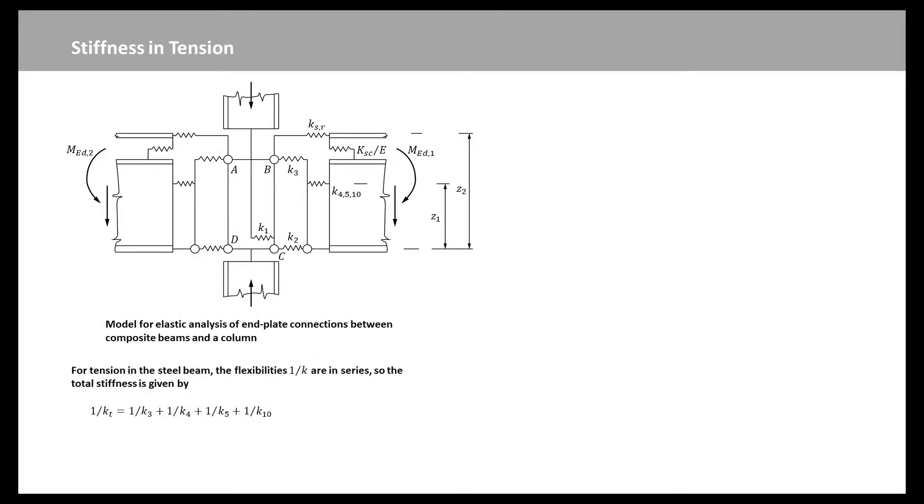For tension in the steel beam, the flexibility 1 over K are in series, so the total stiffness KT is given by this equation. Slip of the shear connection causes a flexibility 1 over KSC, which is found as a ratio of displacement to force. So for consistency with KSR, the stiffness coefficient is KSC over E, which is in series with KSR. The combined stiffness for reinforcement is given by this equation.